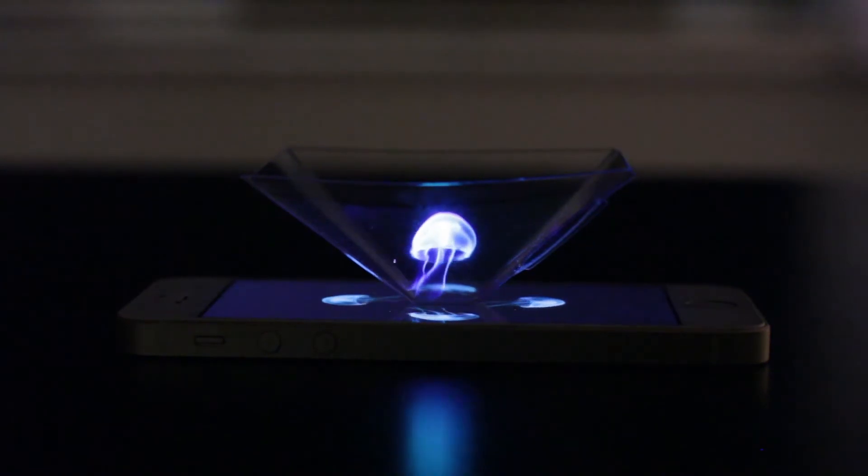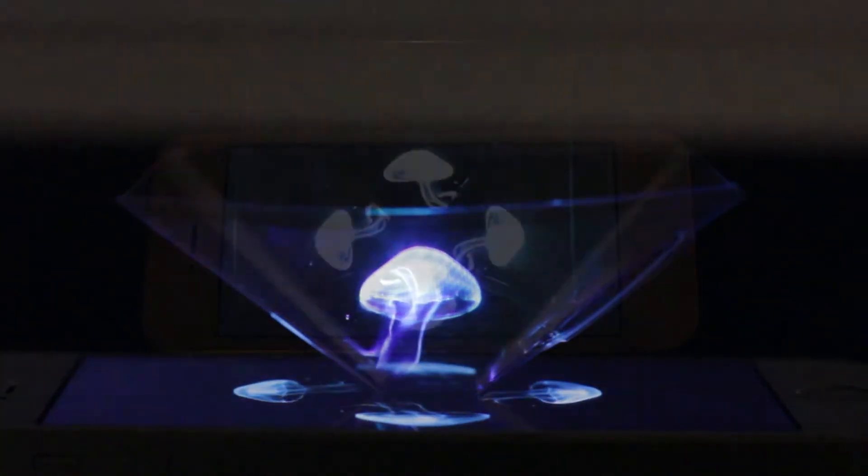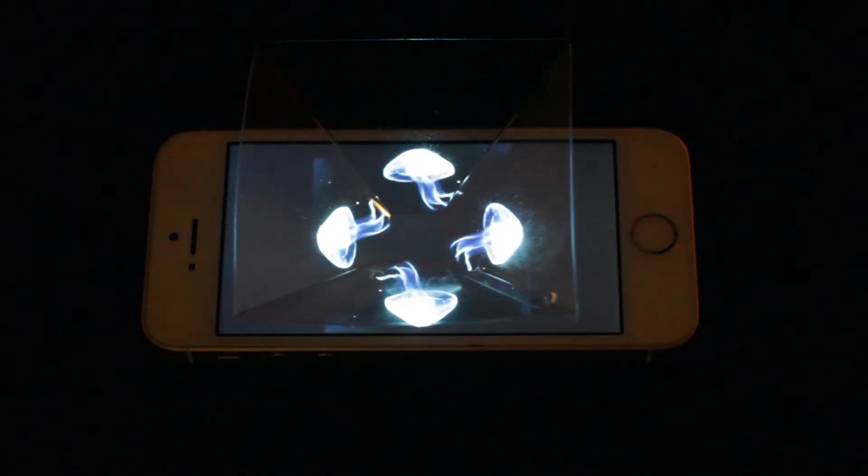It is placed on a smartphone or tablet and a special YouTube video with four-sided symmetry is played, creating something that looks like a hologram as the four images are brought together to a common focus. Here is an example of one of the many four-sided videos available on YouTube.